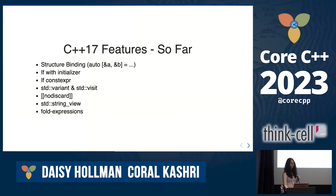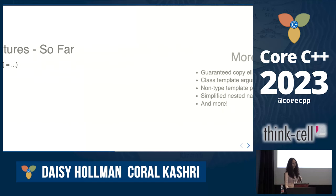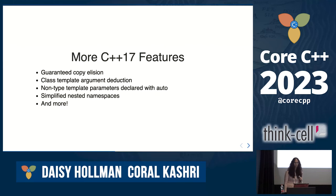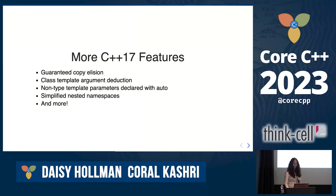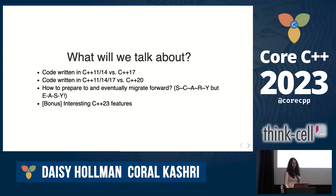To summarize C++17 features covered so far: structured bindings, if-with-initializer, if constexpr, std::variant and std::visit, [[nodiscard]] attribute, std::string_view, and fold expressions. However, C++17 gave us a lot more than that. Now let's continue to C++20 features.